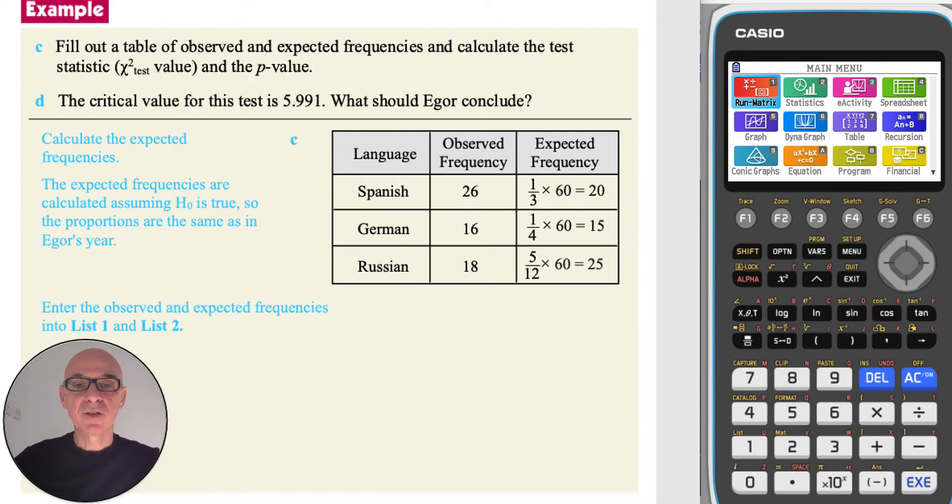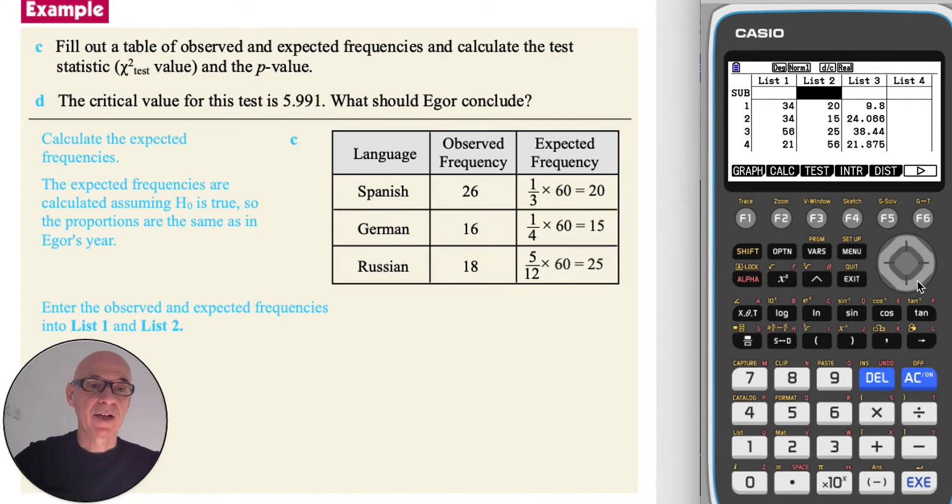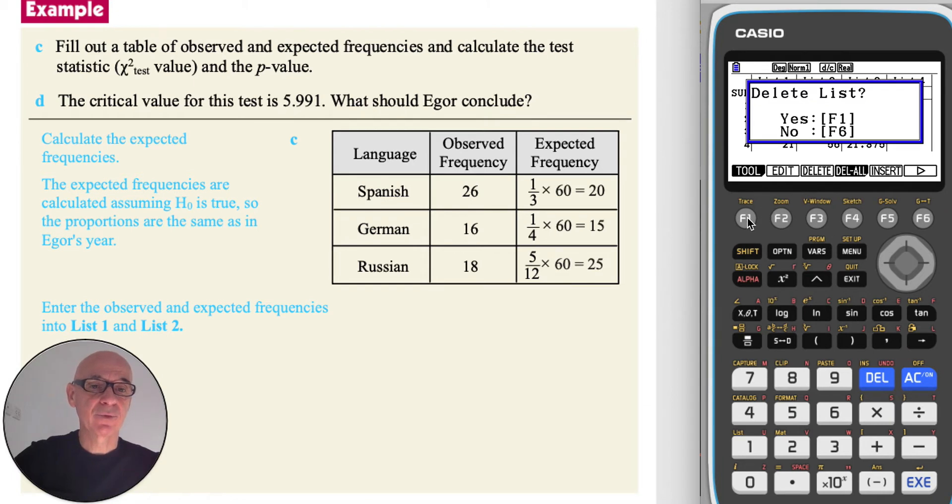In order to calculate the test statistic and the p-value, we need to enter the observed and expected frequencies into list 1 and list 2 on your calculator. So from the main menu, if you select statistics and then press F6 and then F4 to delete all the contents of a list and F1 to confirm, then scroll across and repeat the process for the other lists: F4 and F1.